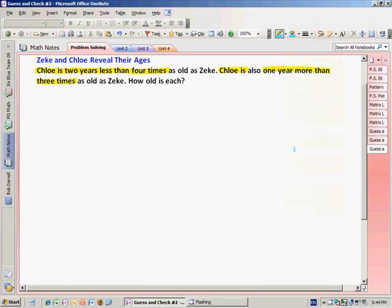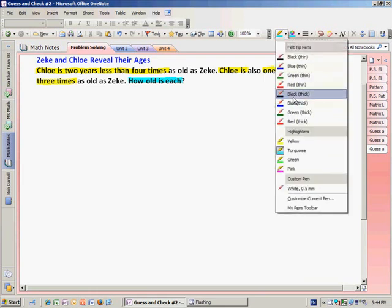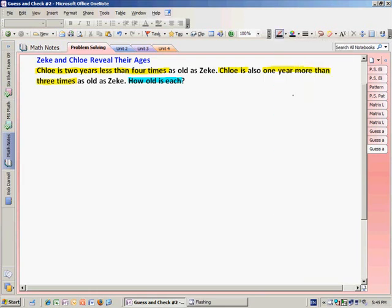And we always need to identify what the question is asking for. So I need to determine how old each of these people are. As I'm getting ready to set up my guess and check, I'm going to use a chart to help me organize my information. And my first column should always be my guess number. Other columns will need to relate back to the problem. In this problem I need to determine how old Zeke is and how old Chloe is.